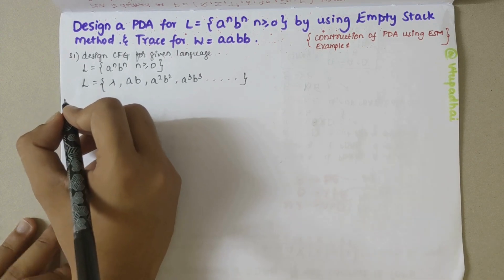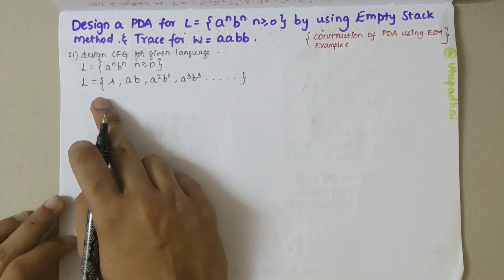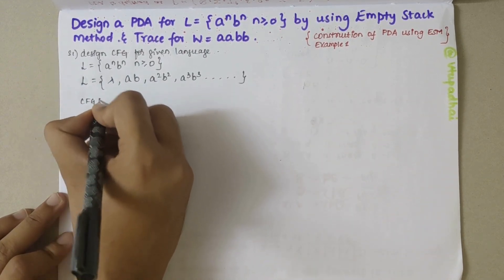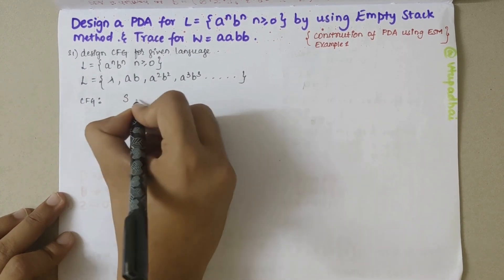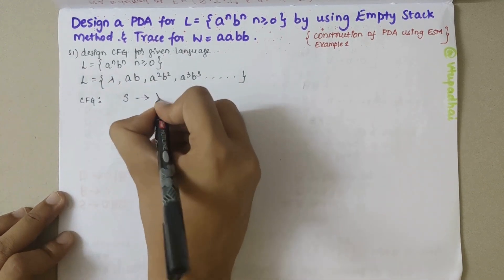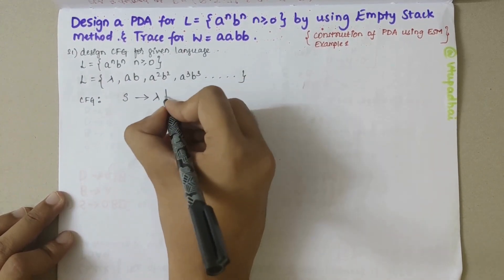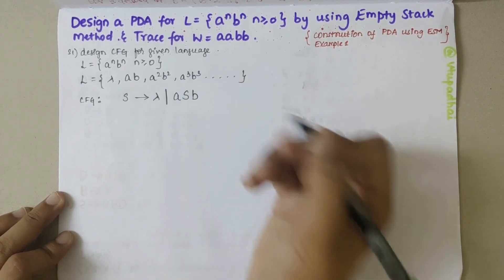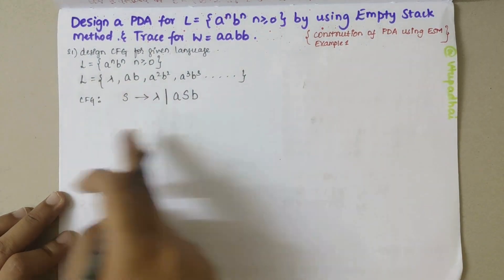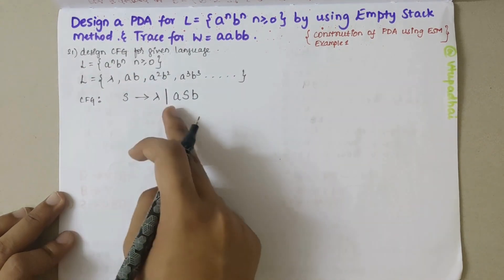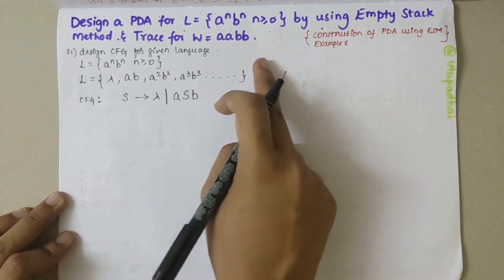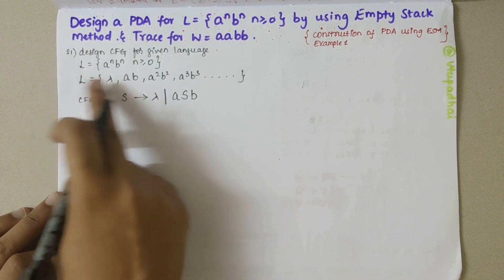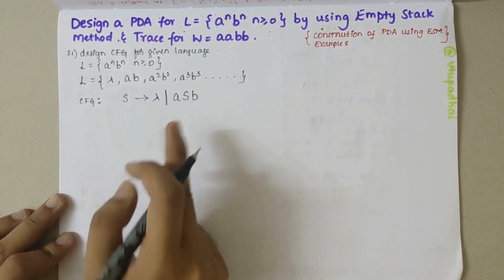We have already learned designing CFG in previous videos. For this language, the CFG would be: S derives lambda, or S derives aSb. Recursively adding A and B gives strings of this form, and substituting lambda for S gives ab, which belongs to the language. That's how the CFG is defined.